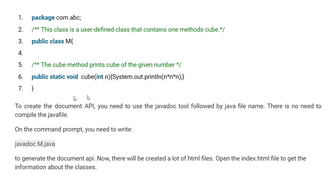For example, I have a class called M, and I have given a comment like: 'This class is a user-defined class that contains the method cube, and the cube method prints the cube of the given number.' That is the documentation I have given. To create the documentation API, you need to use the javadoc tool. If you install the JDK, inside the JDK you get the javadoc tool. In the command prompt you write: javadoc M.java — there is no need to compile the Java file first.